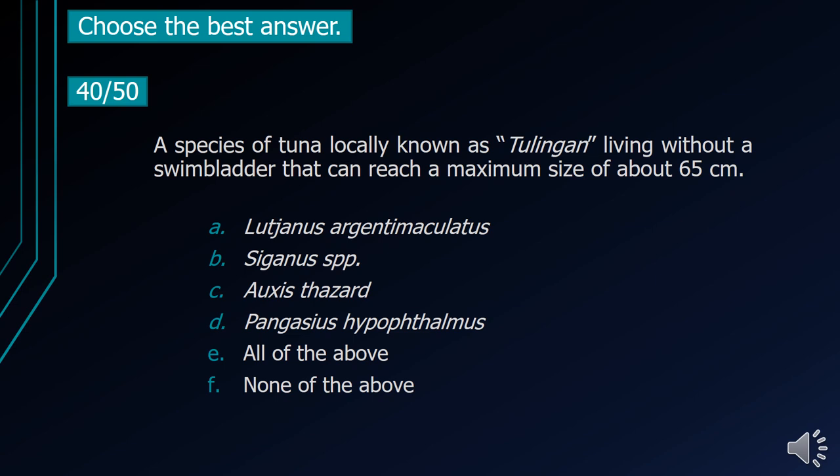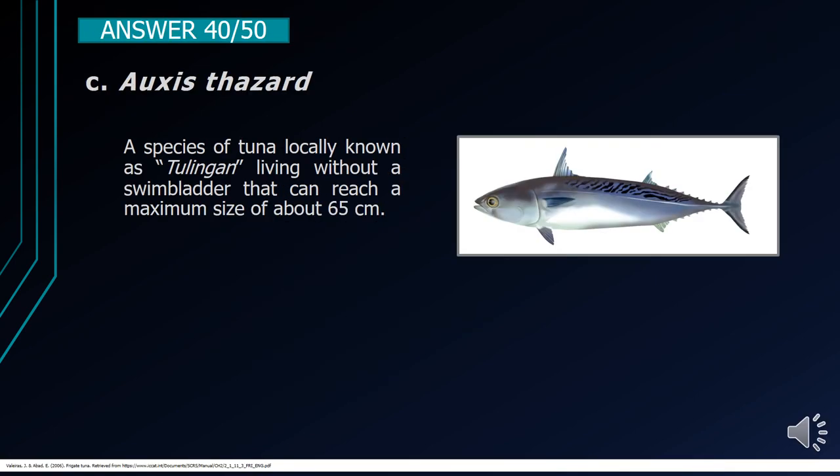Number 40. A species of tuna locally known as tulingan, living without a swim bladder and reaching a maximum size of about 65 centimeters. A. Lutjanus argentimaculatus. B. Siganus spp. C. Auxis thazard. D. Pangasius hypophthalmus. E. All of the above. F. None of the above. The correct answer is letter C, Auxis thazard. It is a species of tuna locally known as tulingan, living without a swim bladder and reaching a maximum size of about 65 centimeters.